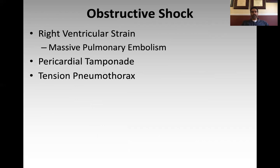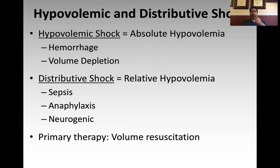Similarly with obstructive shock — RV strain from a massive PE, pericardial tamponade, tension pneumothorax — these things are very easily and directly identifiable using ultrasonography. Hypovolemic and distributive shock look essentially the same on ultrasound, because both are really hypovolemic shock states. Hypovolemic shock involves absolute hypovolemia from hemorrhage or volume depletion. Distributive shock is a relative hypovolemia where blood volume is distributed over a larger vascular surface area. The primary therapy for both is volume resuscitation, so the key question is: is there a volume-responsive shock state that would respond to a fluid bolus or blood?